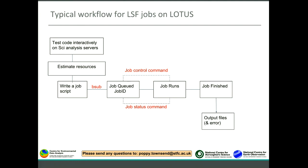The job moves to the compute node and starts running. While in the stage between queuing and running, you can query the status of your job using the job status command. You might also decide to stop and resume it later, or even kill it if you've put in the wrong resource requirements. Once completed, the job has an exit code — zero or non-zero — and all standard error and output files are ready for you to inspect.